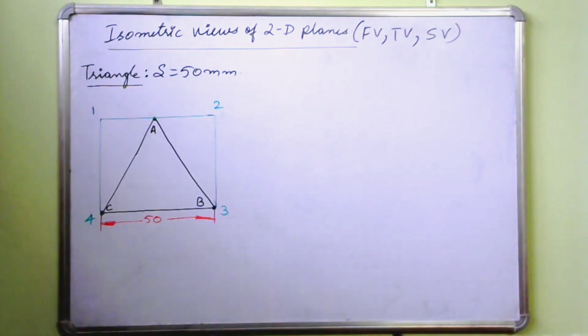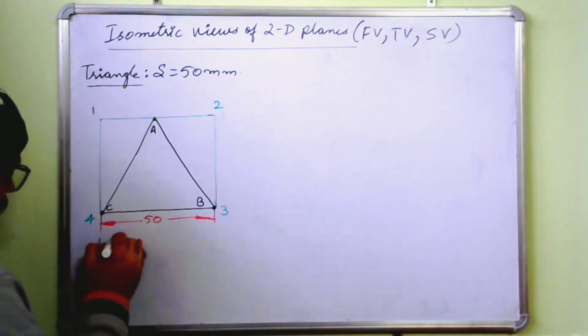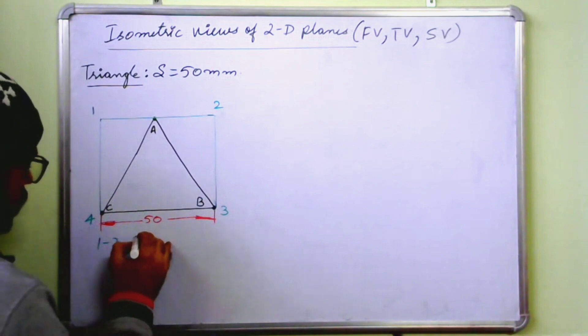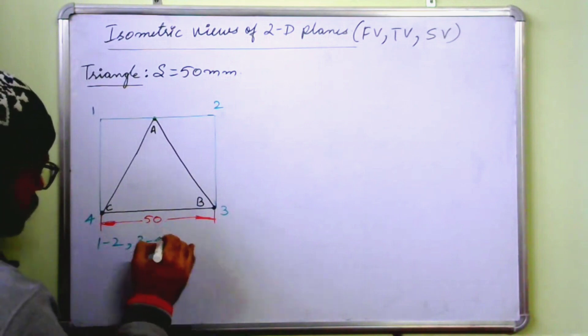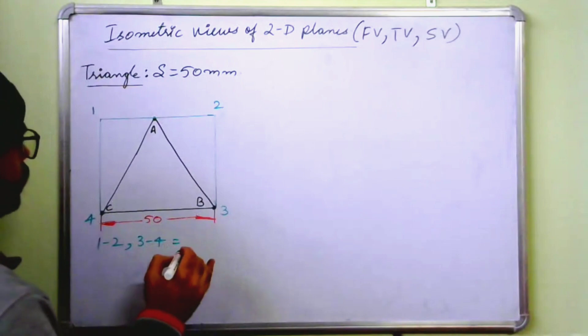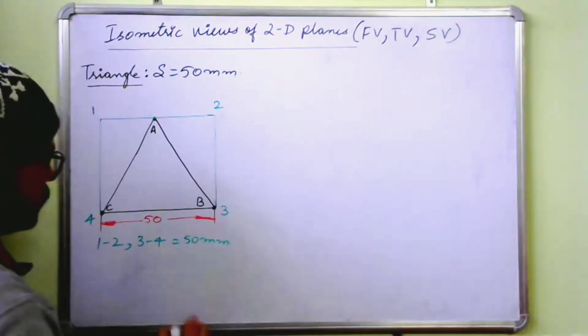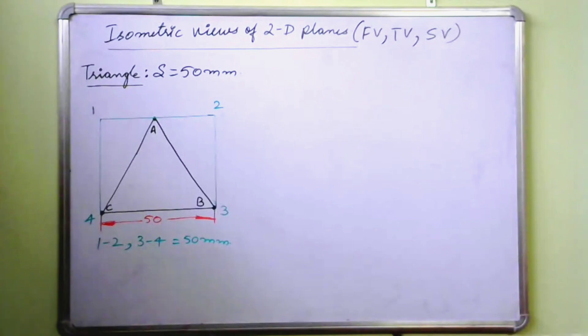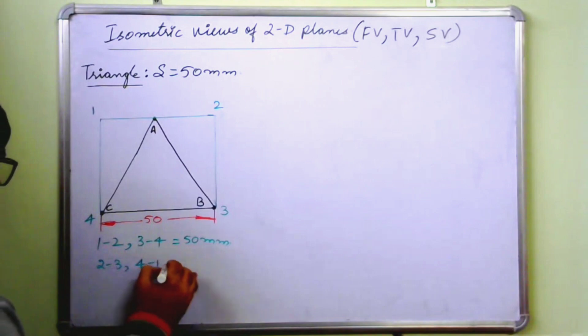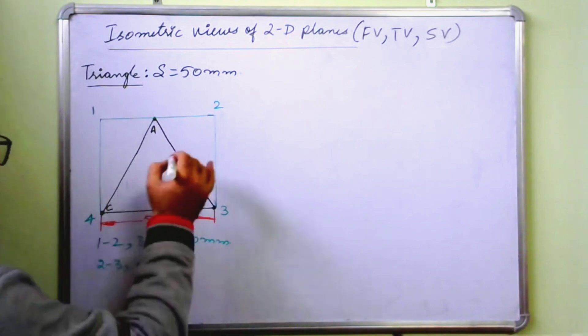So here, 1, 2 and 3, 4. These are equal to 50 mm. Similarly, 2, 3 and 4, 1. These are equal to...